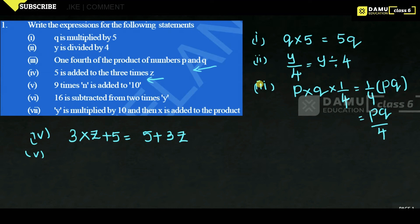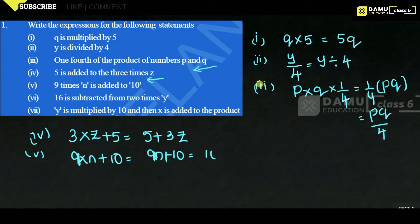The fifth statement is: 9 times of n is added to 10. 9 times means 9 into n, added to 10, giving 9n plus 10. You can also write it as 10 plus 9n — either form is acceptable.